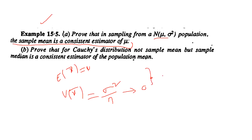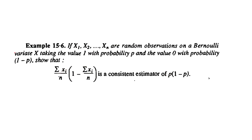Note: the sample variance is not unbiased but is asymptotically consistent. For the Cauchy distribution, the sample mean does not exist, but the sample median is a consistent estimator for the population parameter.